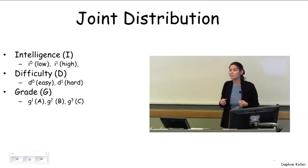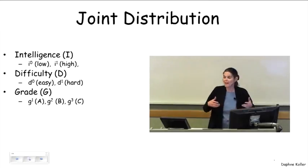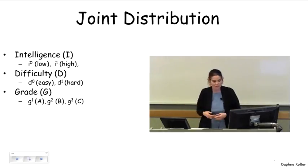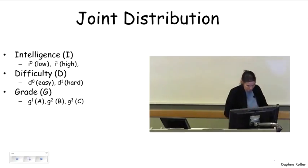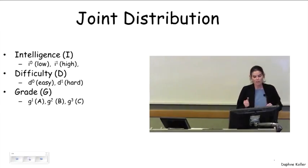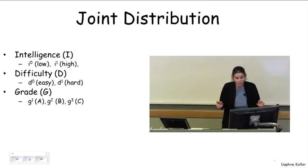Let's start with a very simple example of a joint distribution, one that is going to be extended in examples later on in other parts of the course. Let's start with an example that involves just three random variables. This is what I call the student example.